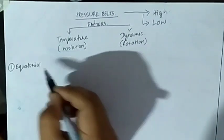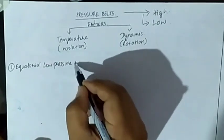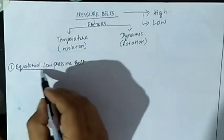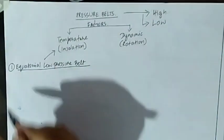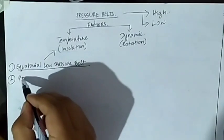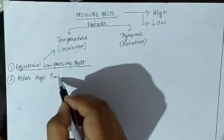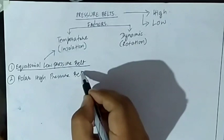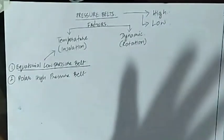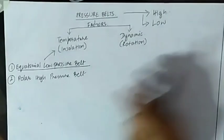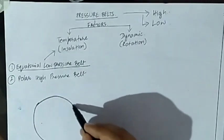So first we are going to discuss the formation of the equatorial low pressure belt, which comes under the category of temperature pressure belts. Another pressure system under this category is the polar high pressure belt, which also comes under the temperature pressure belts. Now let us see the formation of these pressure systems.